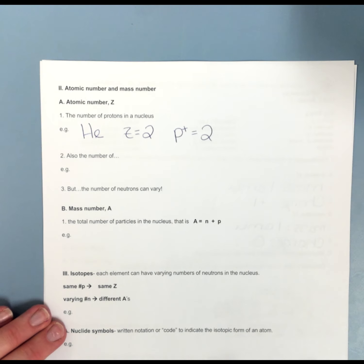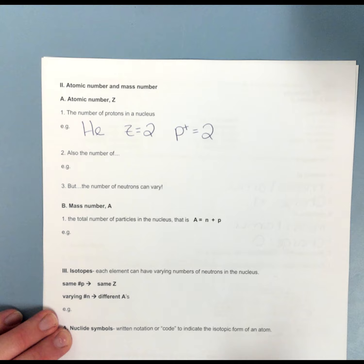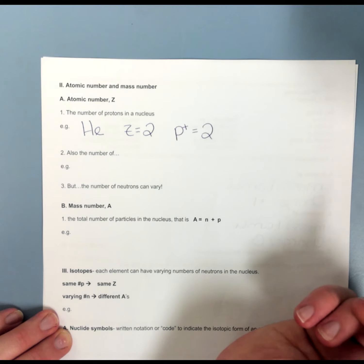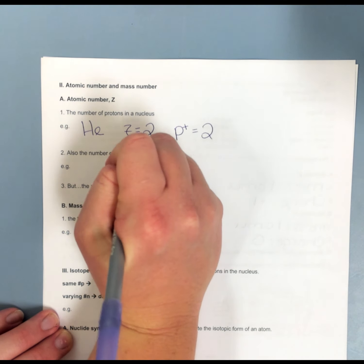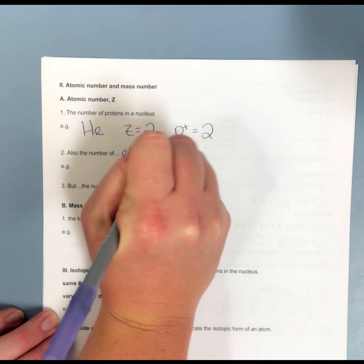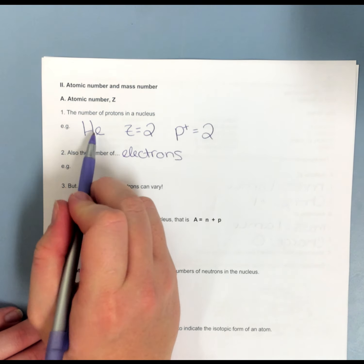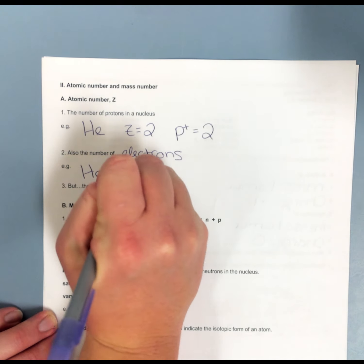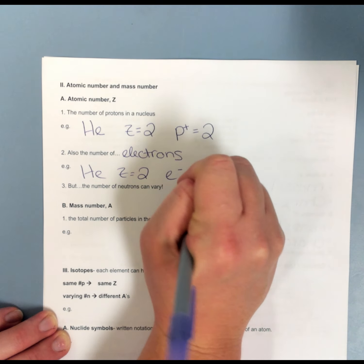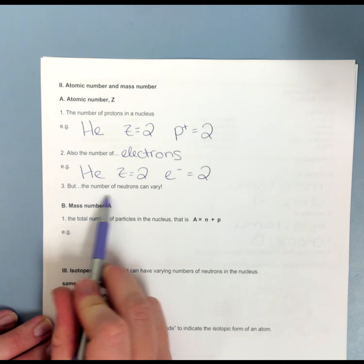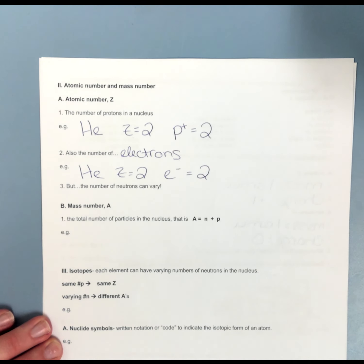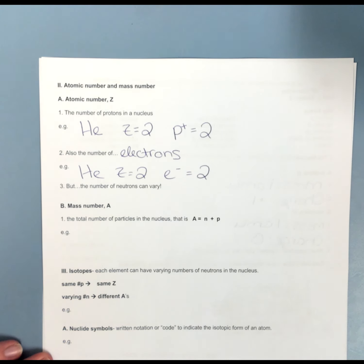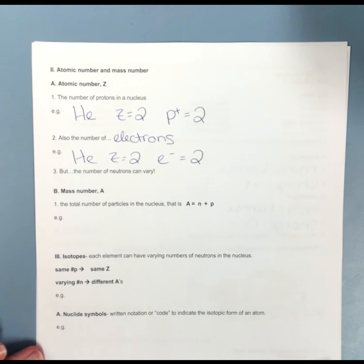We know overall that atoms are neutral. If we have two positive particles, we must also have the same number of negative particles. So it's also the number of electrons. Helium has an atomic number of 2. It has two protons. H-E, my atomic number is 2, which means it also has two electrons. But our number of neutrons can vary. Just because we have two protons, doesn't necessarily mean we have two neutrons. We can in some examples, but not all. How do we figure out the number of neutrons?